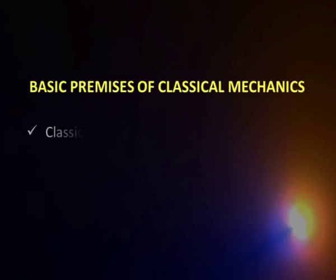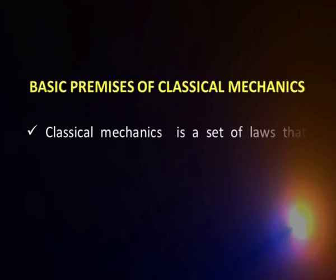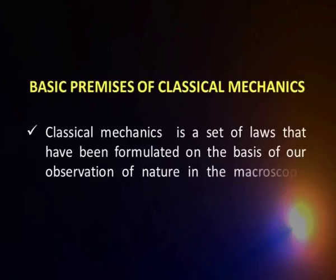Let us make a beginning by looking at what is classical mechanics. Classical mechanics is a set of laws that have been formulated on the basis of our observation of nature over a period of centuries. Whatever we gathered in terms of looking at the motion of astronomical bodies — sun, moon, and things around us — we see things in the macroscopic world, and all those observations have been documented or formulated in terms of certain laws.